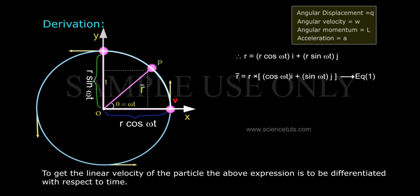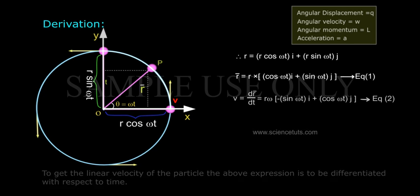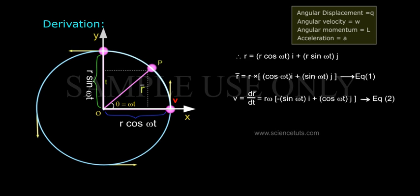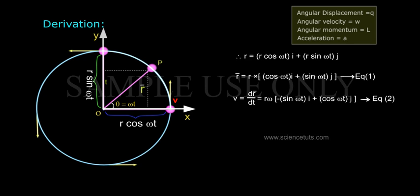To get the linear velocity of the particle, the above expression is differentiated with respect to time: v = dr-bar/dt = r·omega·(−sin(omega·t)·i + cos(omega·t)·j). — Equation 2.